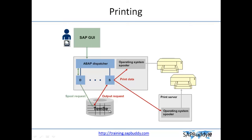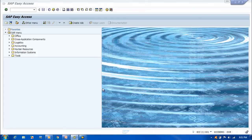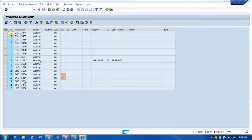Once the spool request is created, the spool work process picks it up and sends it to the output device — this is done on a first-in-first-out basis. TEMSE can be monitored and managed from your SAP system. Let's look at our system: in SM50 you can see the spool work process marked as SPO.